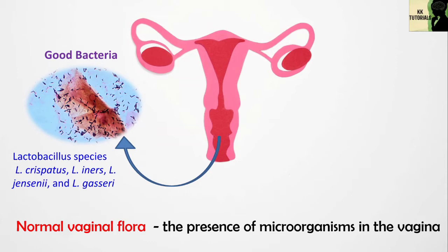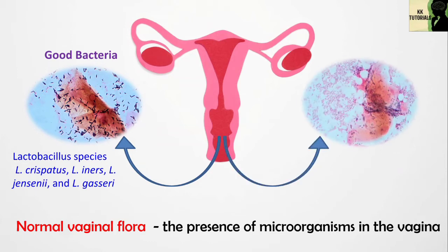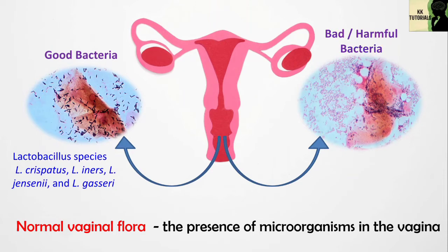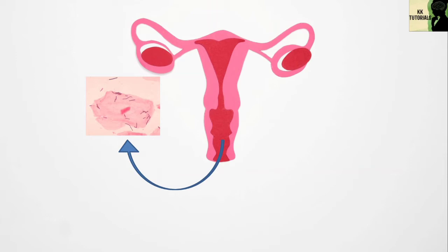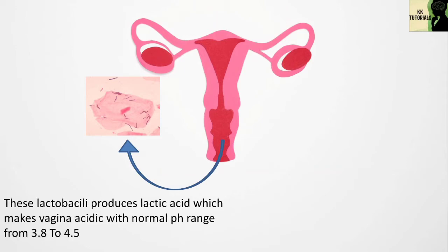When this healthy atmosphere of the vagina gets disrupted, we get lots of infections. These bacteria play an important role in making vaginal pH acidic. They produce lactic acid which makes the vagina acidic, with a normal pH range from 3.8 to 4.5.